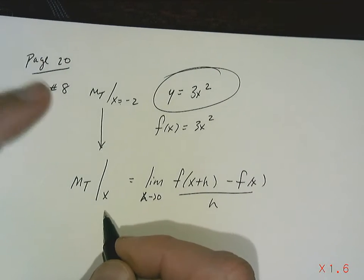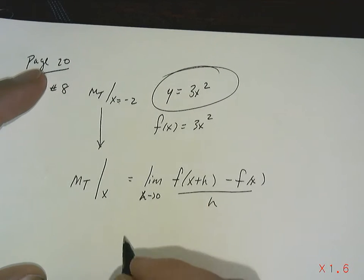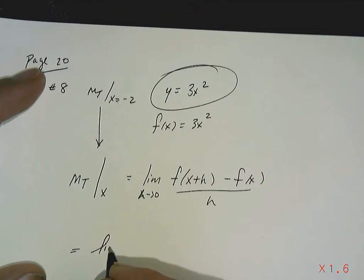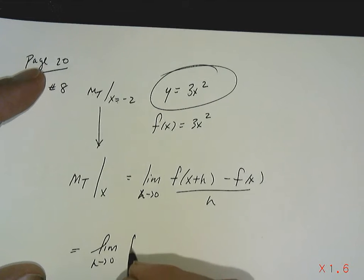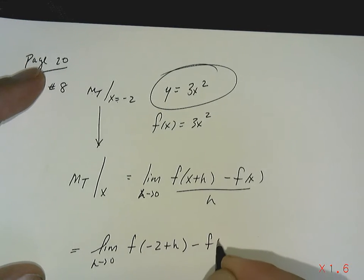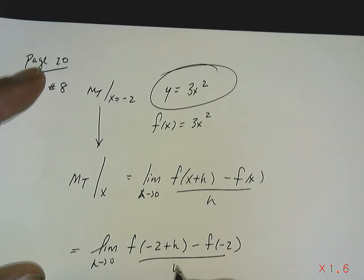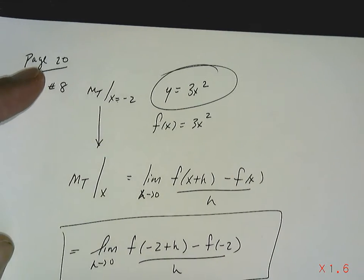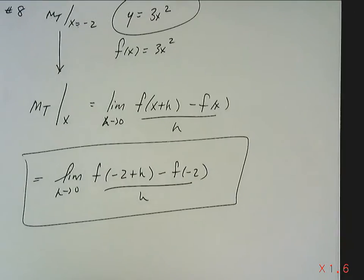Now at this particular question, our x value is negative 2. So it's the limit as h approaches 0 of f of negative 2 plus h minus f of negative 2 over h. That is the first thing we're going to come up with, okay? That is our definition.